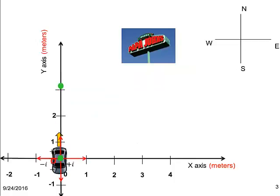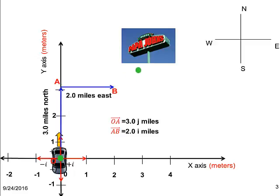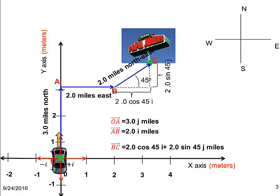Using a Cartesian coordinate system, we can say that the car has moved 3J miles to point A, then 2I miles to point B and then 2 miles along a line inclined 45 degrees to the X axis to reach the destination C.